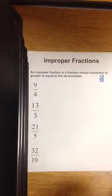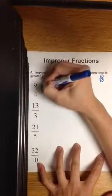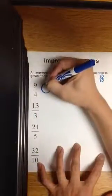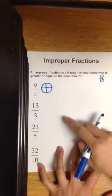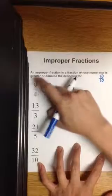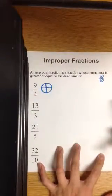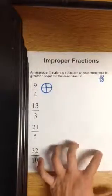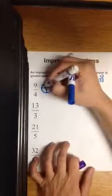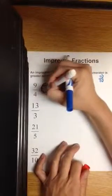We have 9 fourths. So we have a pie or circle that is cut into fourths. The question is asking, how many fourths are there in 9 pieces? How many fours go into 9? Let's see. We have 1. Let me use a different marker.